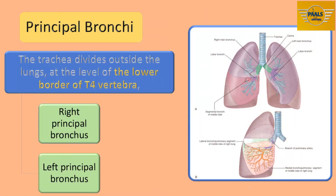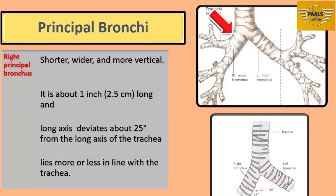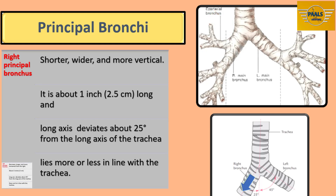The trachea divides outside the lungs at the level of the lower border of T4 vertebra into the two primary or principal bronchi — the right principal bronchus and the left principal bronchus. The right principal bronchus is shorter, wider, and more vertical, about one inch (approximately 2.5 cm) in length. Its axis deviates about 25 degrees from the long axis of the trachea, making it lie more or less in line with the trachea.